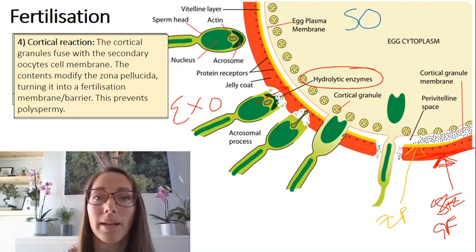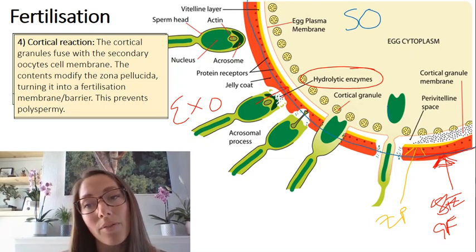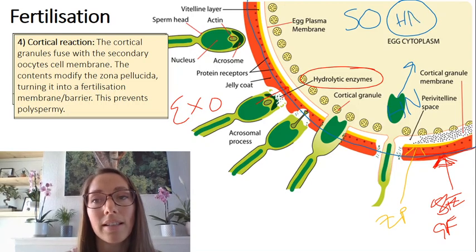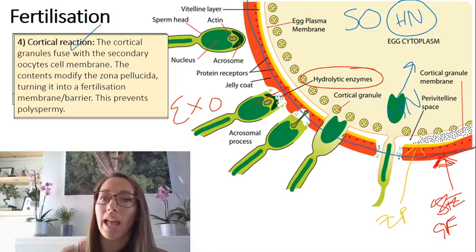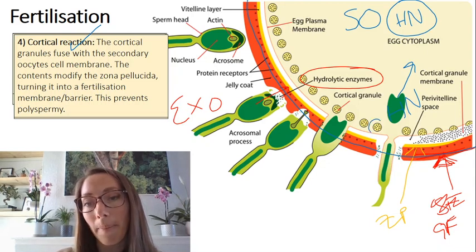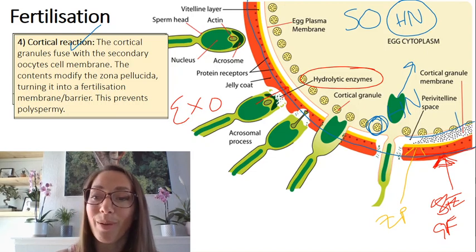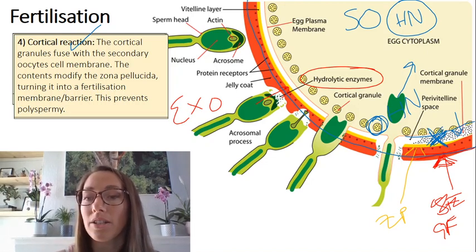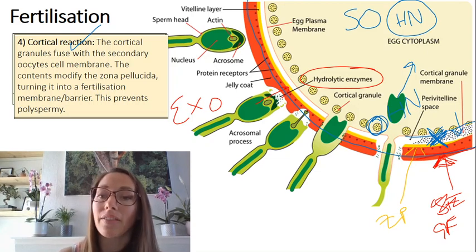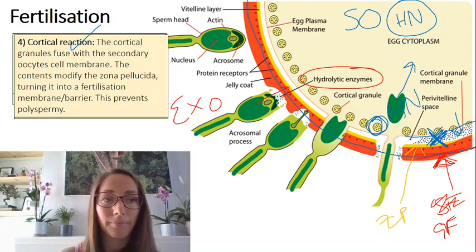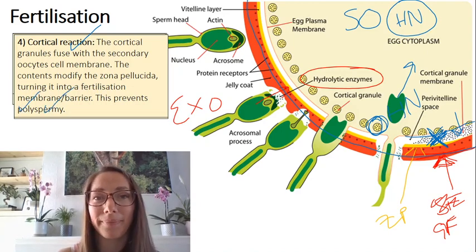Finally, we need to ensure no more sperm deposit their haploid nuclei into the secondary oocyte. The cortical reaction achieves this: cortical granules — membrane-bound vesicles containing enzymes — fuse with the cell surface membrane through exocytosis, releasing enzymes into the space outside the oocyte. These enzymes generate a fertilization barrier that stops any more sperm from fusing with the secondary oocyte, thereby preventing polyspermy — poly meaning many sperm fertilizing the same oocyte.